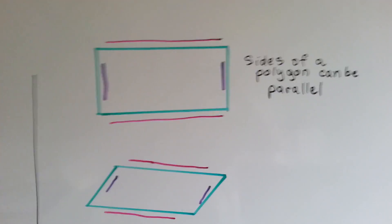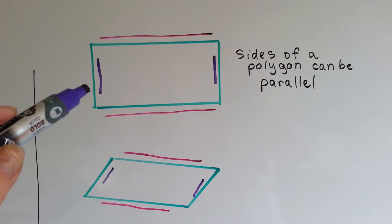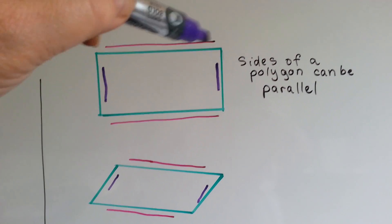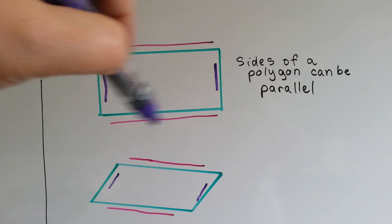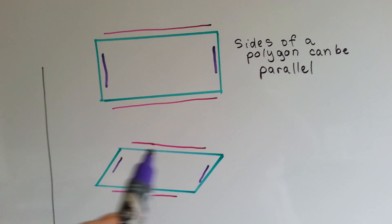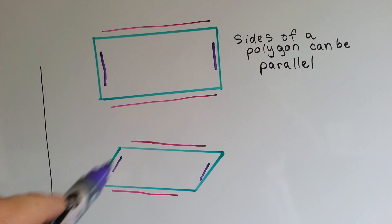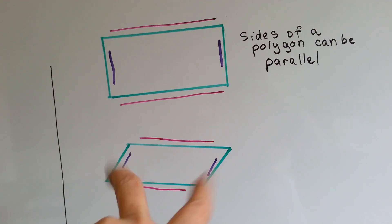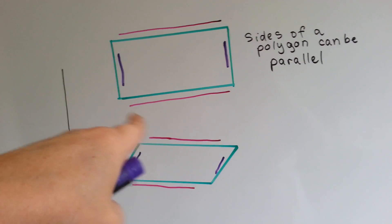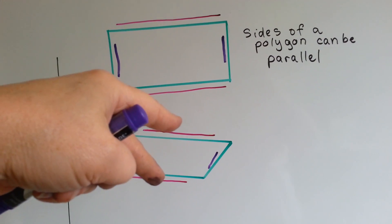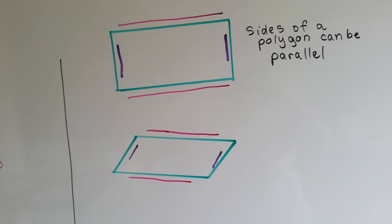The sides of a polygon can be parallel. This side is parallel to this side, and this side is parallel to this side. This side is parallel to this side, and even though these two are slanted, they're parallel to each other. See? They're both going the same way, and these are both going the same way. So these two are parallel to each other, and these two are parallel to each other.